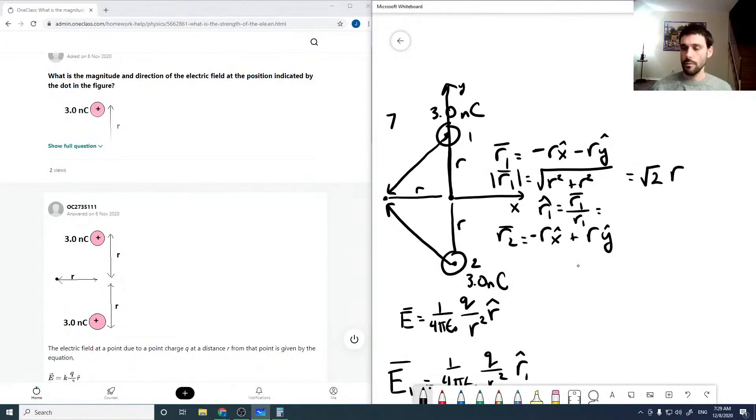Which is minus 1 over root 2 x hat minus 1 over root 2 y hat. Similarly, our r2 magnitude is root 2 r as well, and r2 hat is minus 1 over root 2 x hat plus 1 over root 2 y hat.